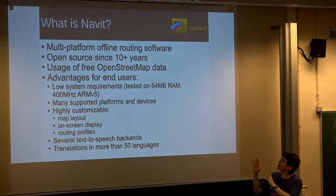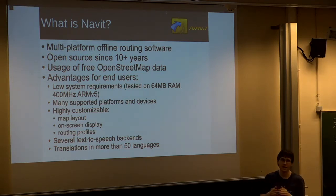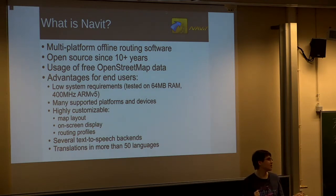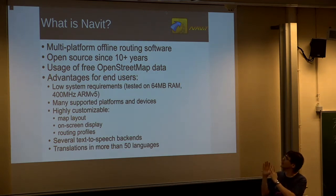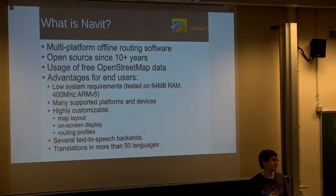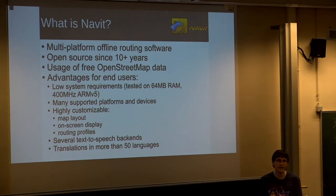So what is Navit? It's an open-source GPS app which is multiplatform, covering many different platforms. It's offline, so you don't need any online connection during operation, just once for downloading the maps. We use OpenStreetMap data. We have been around already quite a while, more than 10 years now. And an advantage for the end-user is, as it's open-source, it's highly customizable. It also does not need that much computing power, so you can also use pretty old devices.